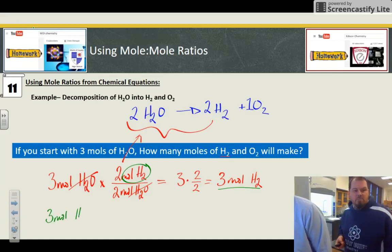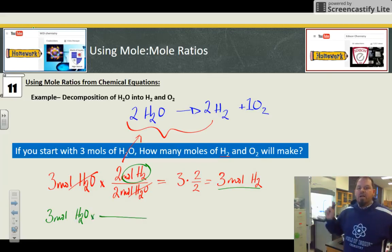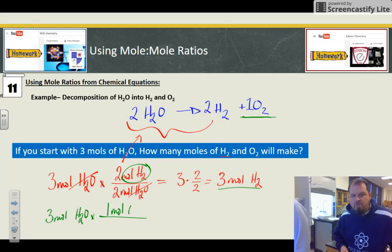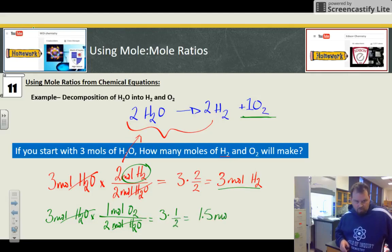We'll do the same thing going into oxygen this time. So the problem says three moles of water. Different conversion factor though this time because my coefficient on O2 is different. I have one mole of O2 for every two moles of water that I use. So that is going to be three times one divided by two. Three divided by two is 1.5 moles of O2.